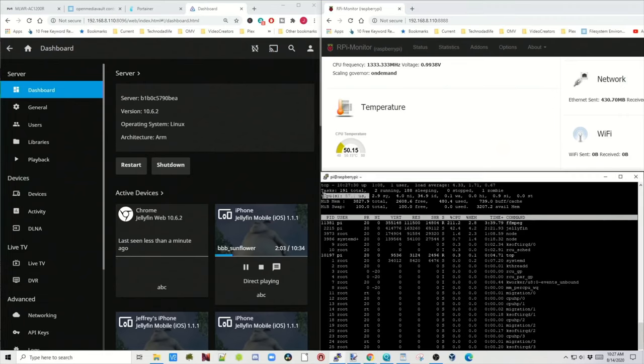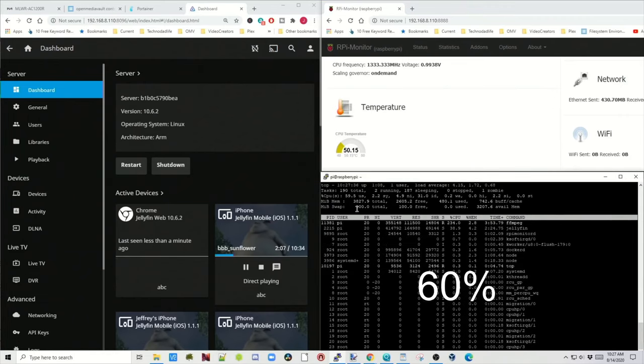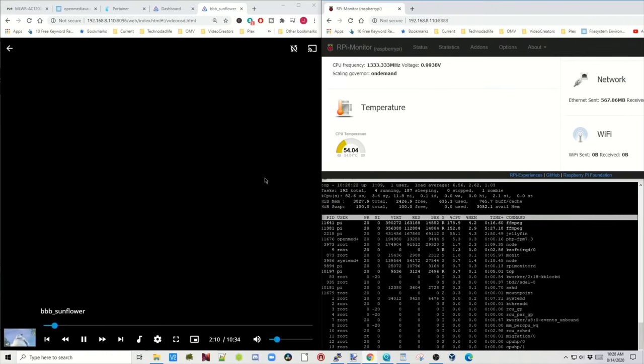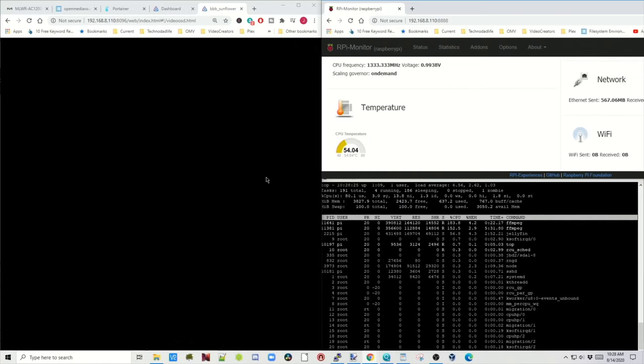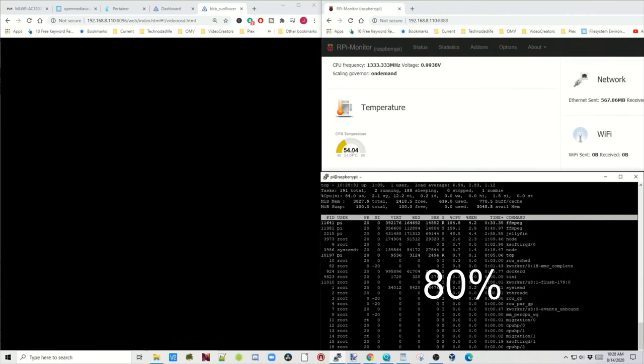Our temperature has gone up from 45 to 50 degrees Celsius. Now our CPU usage is at about 55 to 60%. We add in a seventh instance of Big Buck Bunny and you can see our CPU usage goes up to 80%.